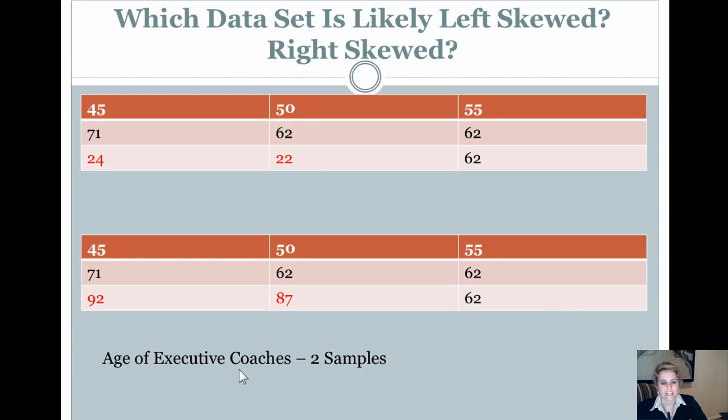So if this is an age of executive coaches, two samples, in this case, most people are probably, let's assume between, if we look at the data, maybe like late fifties, right? The average age of executive coaches, maybe late fifties, sixties-ish. But then, whoa, what happens here? We have a random two executive coaches, one of whom is 22 years old and one is 24. So that means that our left tail in this case of the data is going to be longer than the right case. On this, in this particular case, there are two oldies here, one executive coach who is 92 and one who's 87. So that's going to be a right skewed data.